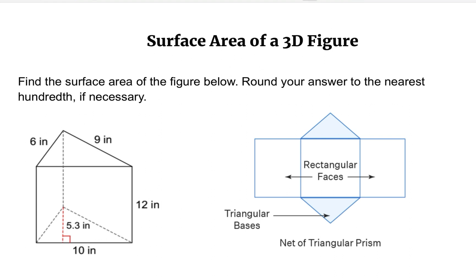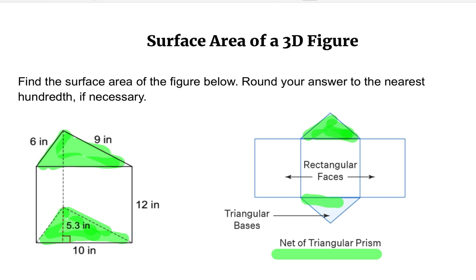Why do we consider this a triangular prism? It is because the base is made up of a triangle — both top and bottom are triangles. So in this area right here, we call this a net of a triangular prism. It is a two-dimensional figure when we unfold the three-dimensional figure. The top is a triangle, the bottom is also a triangle — that's what makes this figure a triangular prism.